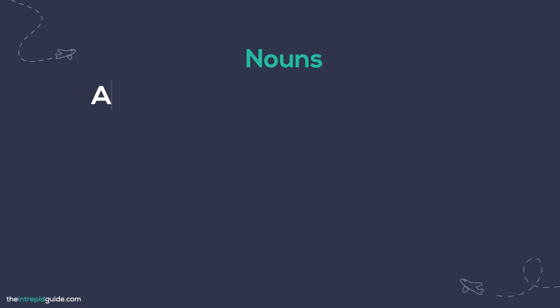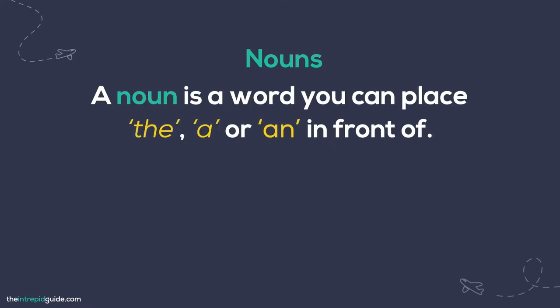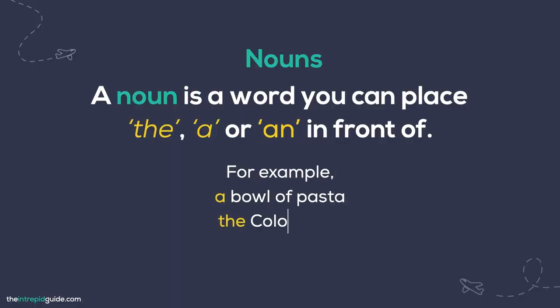Why is grammatical gender important? If you're new to language learning, you may have never heard of grammatical gender. Gender in the grammatical sense means that a word can be classified as masculine, feminine or neuter. In Italian, all nouns, articles, pronouns and adjectives have a gender. To help you brush up on these basic grammatical terms, here is a quick recap. Nouns: generally speaking, this is anything you can place 'a' or 'the' in front of — a place, idea, animals, things, event or person. For example: a bowl of pasta, the Coliseum, a piazza.